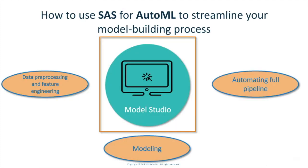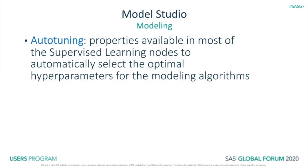Now let's talk about modeling. Since its first release, Model Studio has had automatic hyperparameter tuning or auto-tuning available in many of its supervised learning nodes for training a predictive model. Hyperparameters are properties that affect the training process, such as learning rate, regularization parameters, and the number of trees for a forest model. Finding the optimal value for the hyperparameters for each model can involve a lot of manual trial and error.